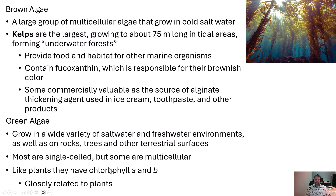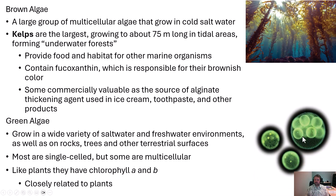Green algae have chlorophyll A and B. They're believed to be closely related to plants, and they're often seen on rocks and terrestrial substrates, anywhere that's wet and has enough light for photosynthesis. Volvox is in the green algae group — more in an aquatic form, floating as phytoplankton rather than stationary on rocks. Lots of different types of green algae are very important as food sources; snails, mayflies, and other scraper organisms consume a lot of green algae.